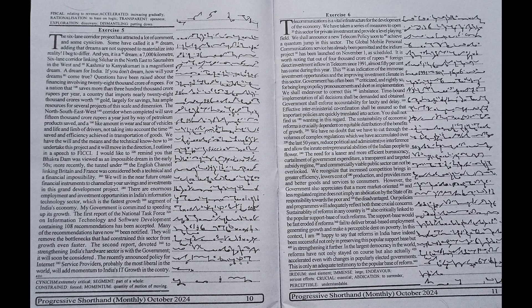The six-lane corridor project has attracted a lot of comment and some cynicism. Some have called it a dream, adding that dreams are not supposed to materialize into reality. I beg to differ, and yes, it is a dream. A seven thousand kilometer six-lane corridor linking Silchar in the northeast to Saurashtra in the west and Kashmir to Kanyakumari is a magnificent dream, a dream for India. If you do not dream, how will your dreams come true?